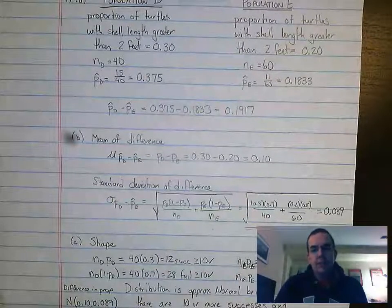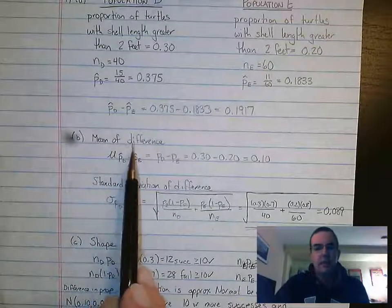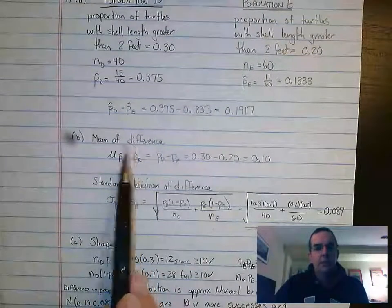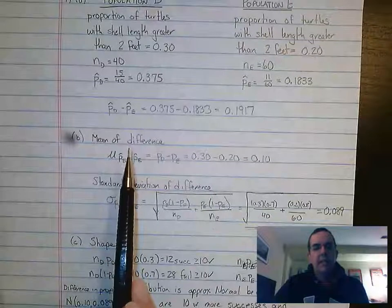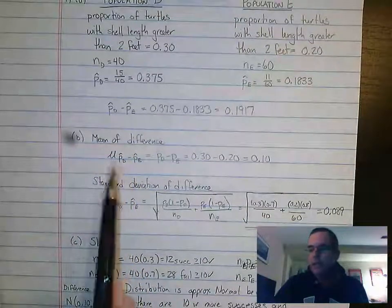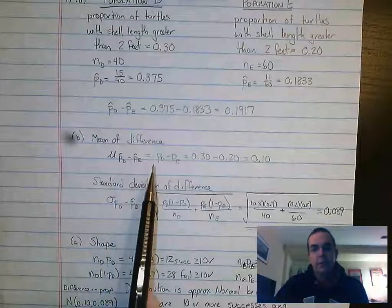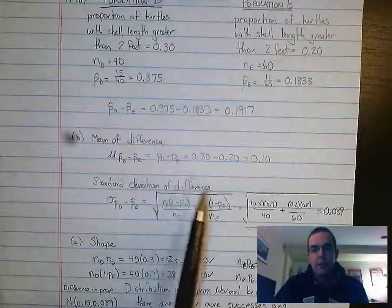The next question asks about sampling distributions and the mean of the difference. Since the sample was selected randomly, the mean of the sampling distribution of the difference of the two is equal to the difference of the two claimed parameters.